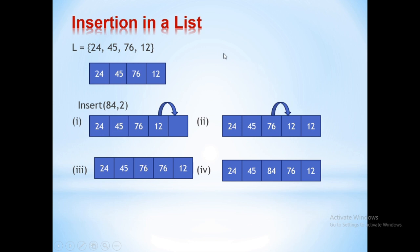Let L be the given list which contains four elements: 24, 45, 76, and 12. I am trying to insert 84 at the second index position. That means 84 has to come between 45 and 76.